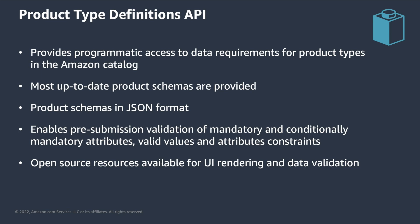This has also enabled the introduction of rules for mandatory attributes, valid values, and attribute constraints that you can execute before submitting the data. The great thing about using JSON schemas is that there are a number of open source resources available that can be used for data validation and also for UI rendering. So you don't have to spend time implementing that logic, but can leverage existing resources instead.